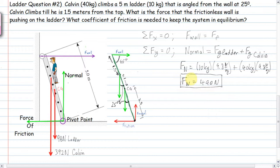We've now done the sum of the forces in the X and the sum of the forces in the Y. For the X we have the wall force, which we could expand to be mu times the normal force for more definition, but we'll leave that for later. Now let's move to our last equilibrium condition: the sum of the torques equals zero.